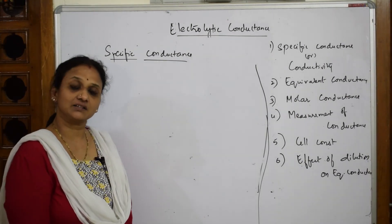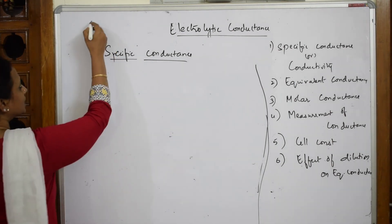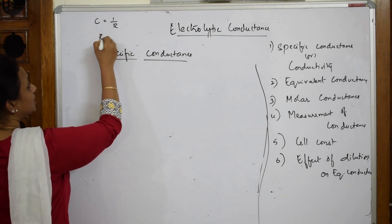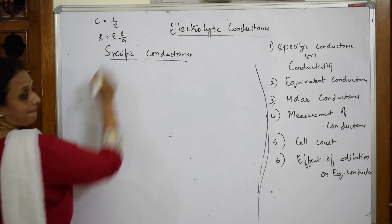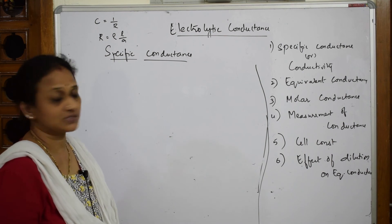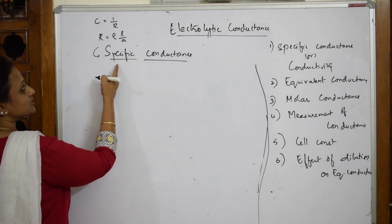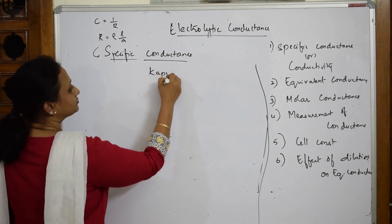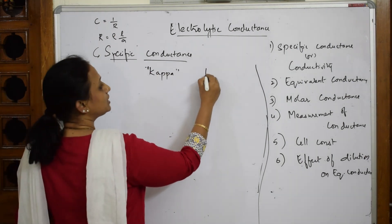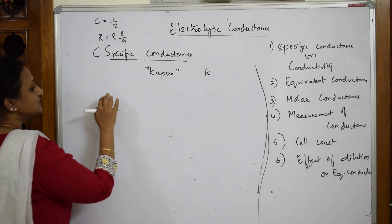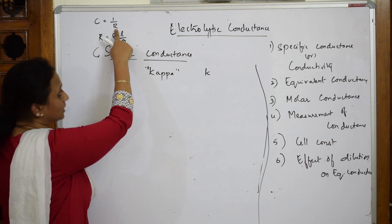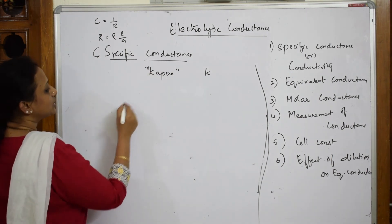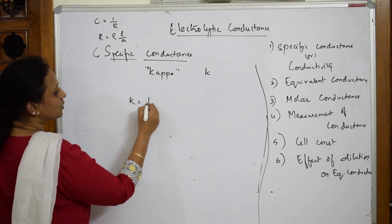Let us summarize. Conductance C is equal to 1 by R, and R is equal to Rho times L by A, where Rho is called specific resistance. Now coming to specific conductance — it is denoted by kappa, written as small k. Since conductance is inversely related to resistance, specific conductance kappa is equal to 1 by Rho.